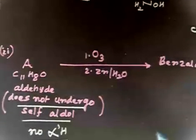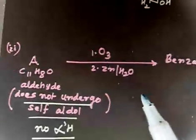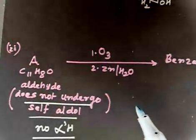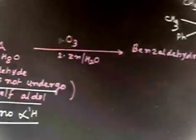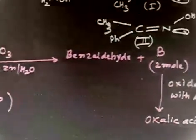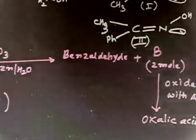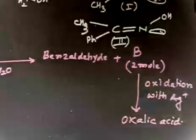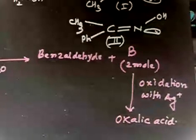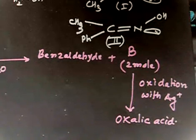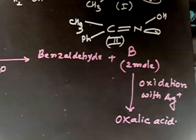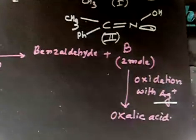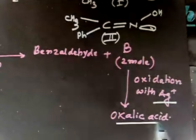If this aldehyde is taken through ozonolysis — ozone followed by H2O, that is reductive ozonolysis — this gives benzaldehyde plus 2 moles of compound B. If B is further oxidized with Ag+, this gives some compound — which turns out to be oxalic acid.